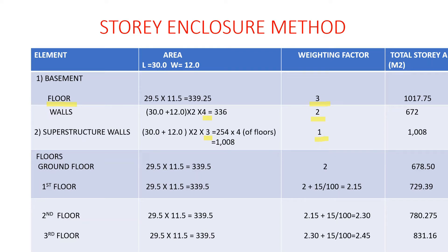For the floors, we start with the ground floor. Using the internal area: 29.5 × 11.5 = 339.25 square meters. The weighting factor for the ground floor is 2, so 2 × 339.25 = 678.50.